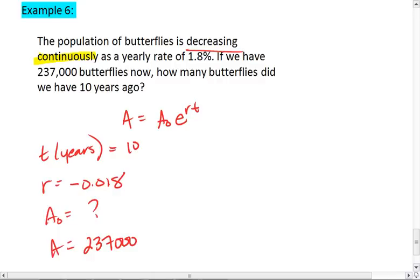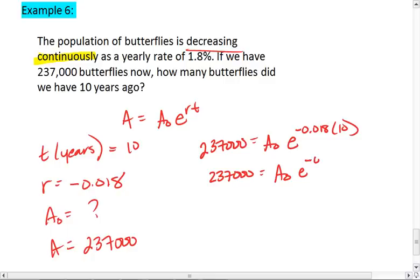So A is the 237,000, and T is now a positive 10 because we're going forward in time. We get 237,000 equals A0 times E to the negative 0.018 times a positive 10. 237,000 equals A0 times E to the negative 0.18.